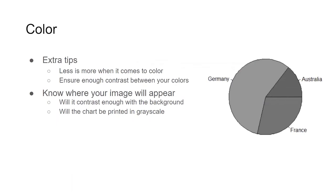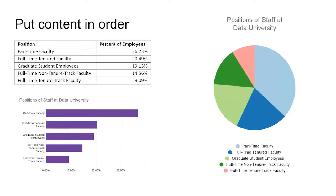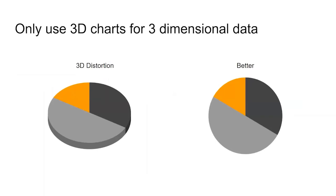Less is more when it comes to color and data visualization, and you always want to ensure there's enough contrast between the colors and between the visualization and its background. Color contrast is especially important to keep in mind if a chart will be printed in grayscale. Putting chart content in order — whether highest to lowest, lowest to highest, or alphabetical — will aid your viewers' interpretation of the chart. When it comes to three-dimensional charts, they should only be used for three-dimensional data, because they have a tendency to distort two-dimensional charts, such as the pie chart shown here, where the gray slice looks larger because of the three-dimensional edge, taking up more area than it would in two dimensions.